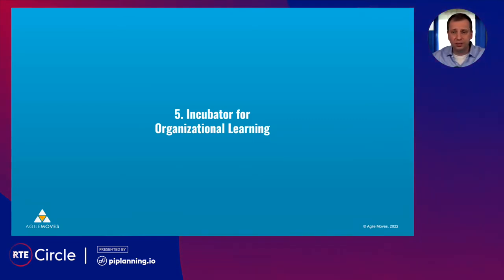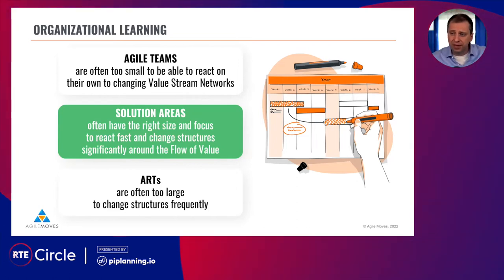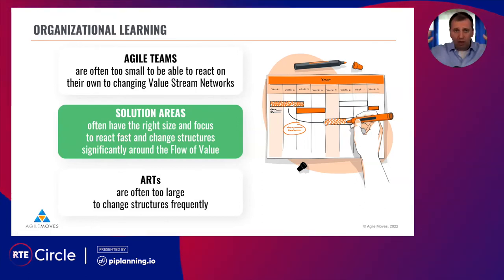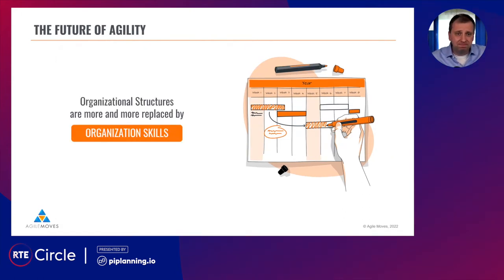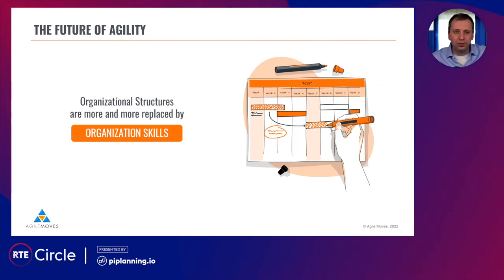The fifth and final aspect: solution areas are a good incubator for organizational learning. Agile teams are good at learning, but in large systems they are usually too small to make significant changes on their own. On the other hand, agile release trains are often too large to react quickly to changes. But solution areas with two to four teams — maximum five — often have the right size to react fast to problems in large systems and are big enough to make significant changes. From my point of view, organizational structures will increasingly be replaced by organizational skills — as we've already seen in professional sports for more than a decade — and it's probably not far away in agile development too. Thank you.